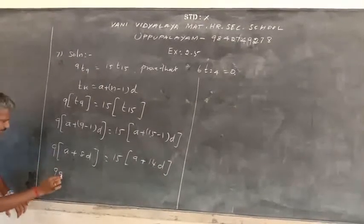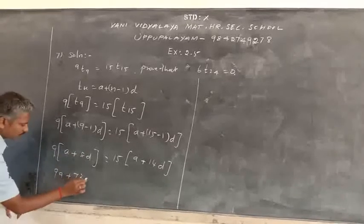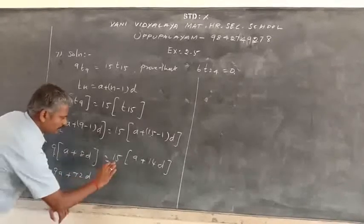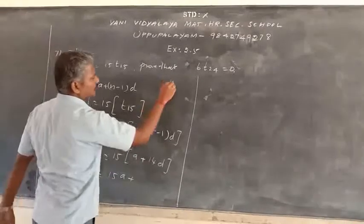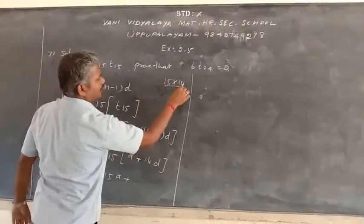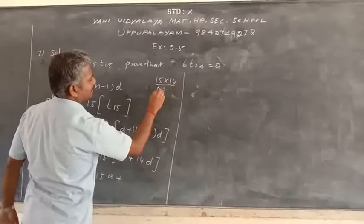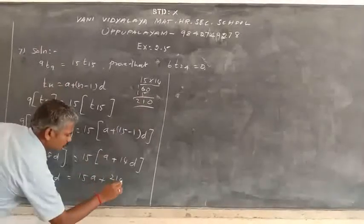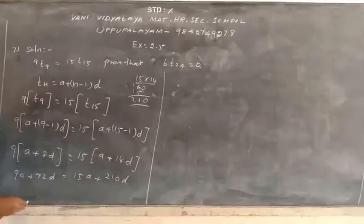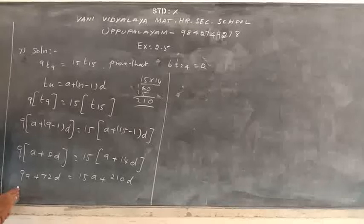9 into A is 9A plus 8, nines are 72D, is equal to 15A plus 15 into 14, so 9A plus 14 gives 210. So 210D. Last second thing here.